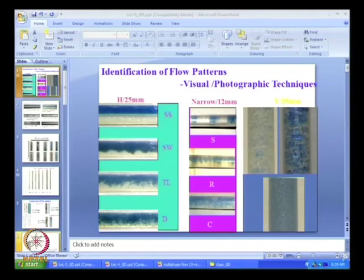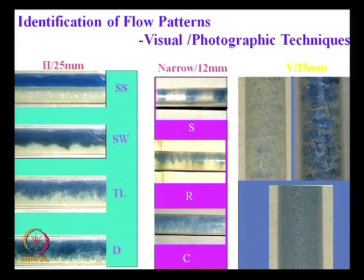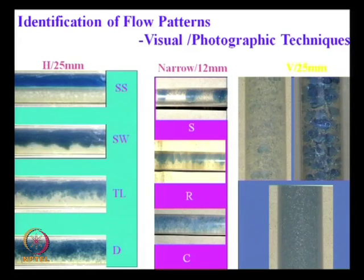We had just started discussing flow patterns encountered when, instead of air, we introduce a second liquid — it can be hydrocarbon kerosene, toluene, or anything. The photographs and experiments I will be showing you have been done in the multiphase flow laboratory of the Chemical Engineering Department of IIT Kharagpur.